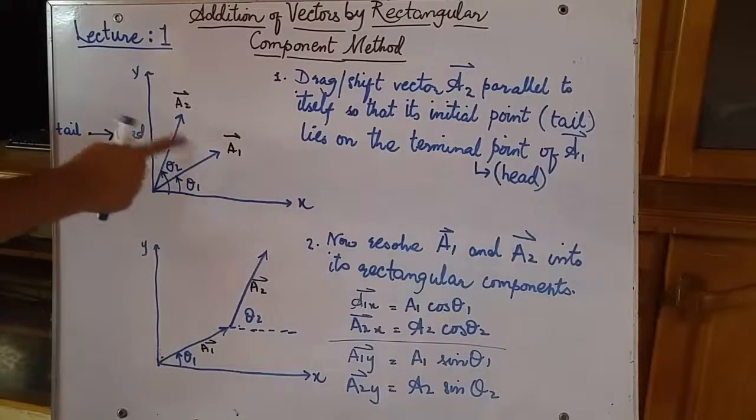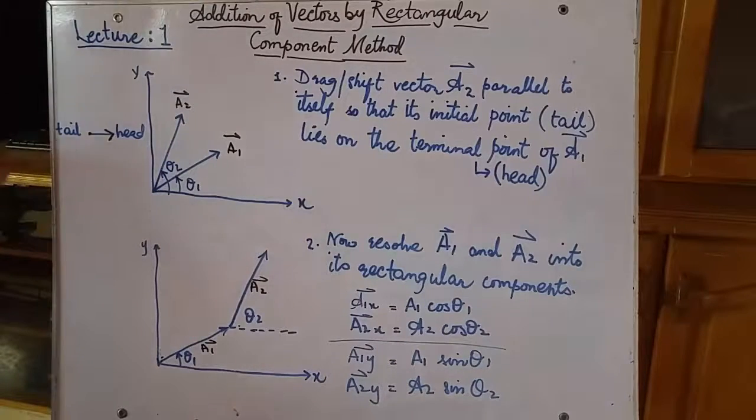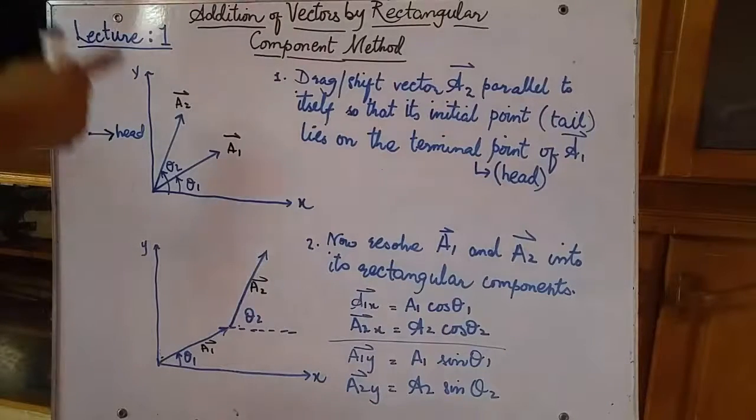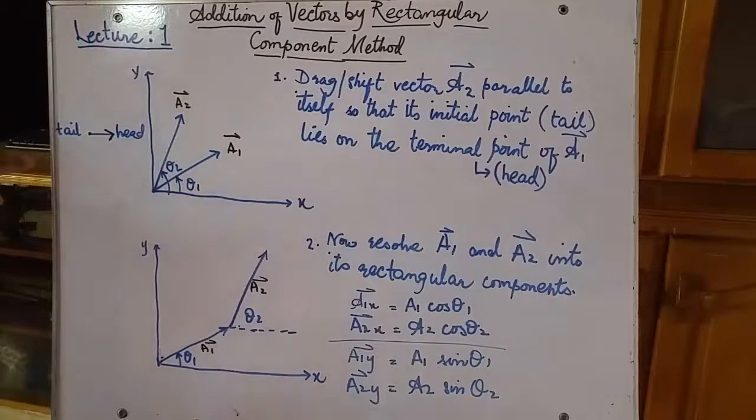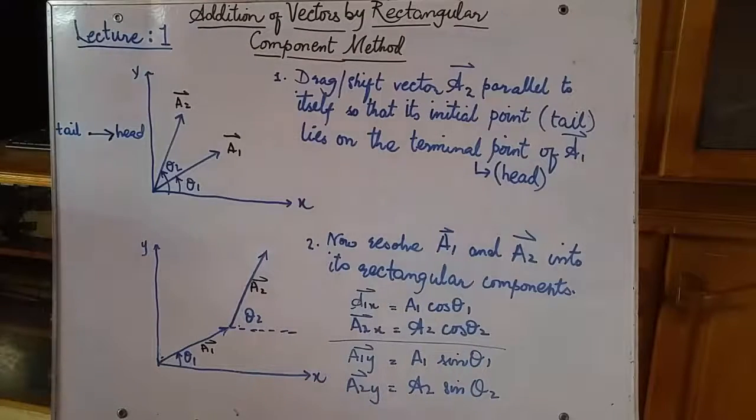So we cannot apply head-to-tail rule here directly, as head-to-tail rule says that the head of the last vector joins the tail of the first vector. And here, both the tails are already joined. So before we proceed, we need to do something.